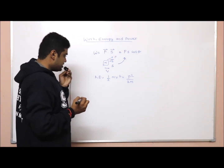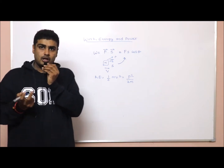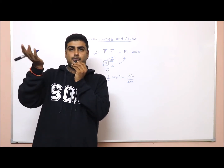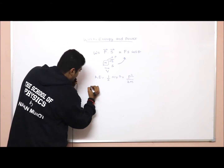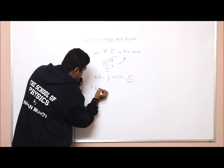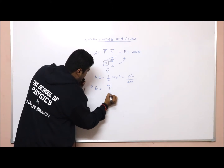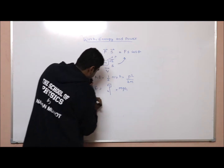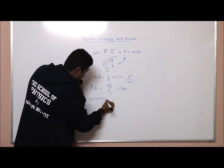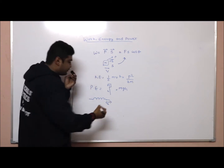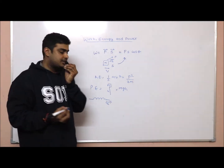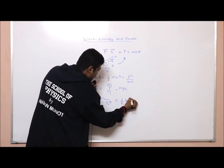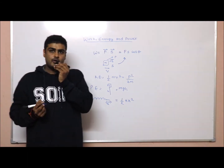Now what about potential energy? Potential energy can be in two forms. One is the spring potential energy and the other is the potential energy caused by height. Suppose a block of mass m is at a height h — the potential energy due to height will be mgh. Suppose there is a spring compressed to a distance x — the potential energy of this spring will be ½kx².